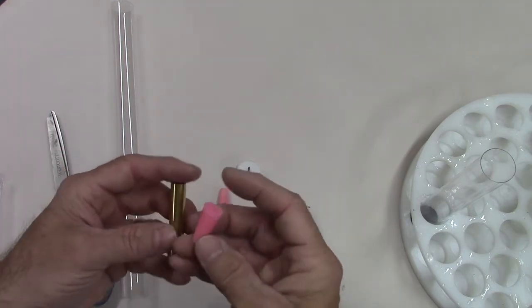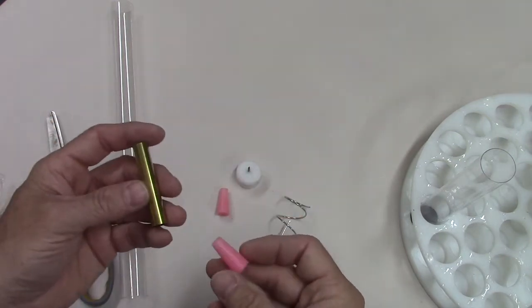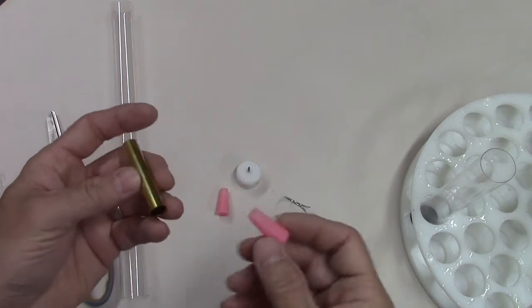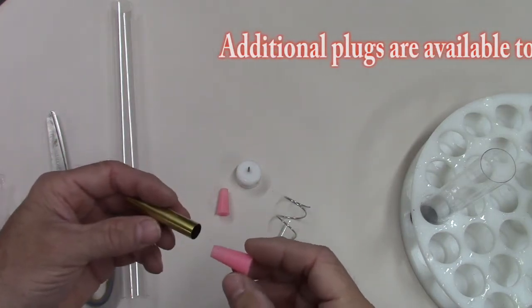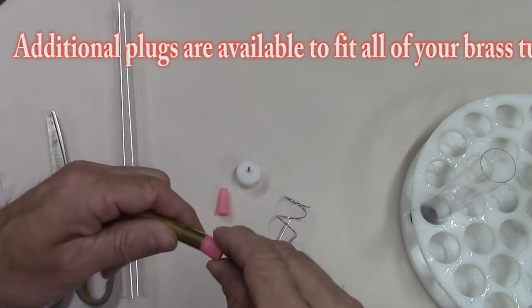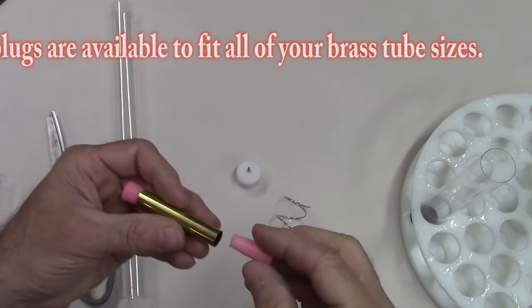The next thing you're going to do is you're going to take the silicone plugs that come with the starter kit, and these are perfect for Sierras, cigars, lower junior tubes, Zen, things of that nature. And you're going to make sure that you seat the plugs in each end of the tube.